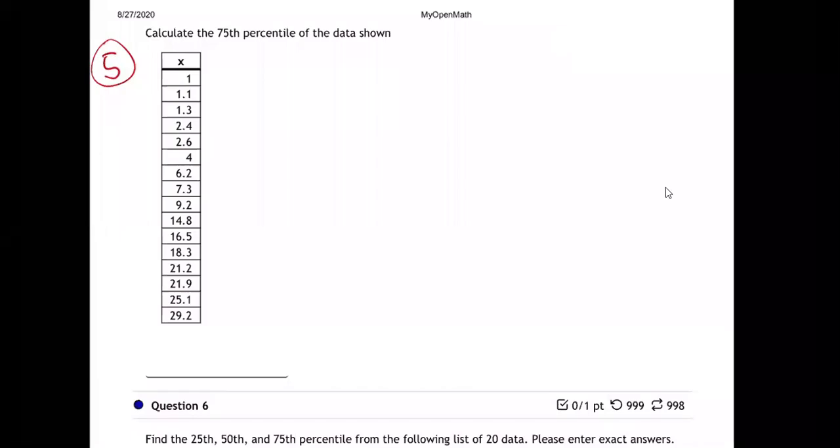Five. Here we go. So they're giving us a bunch of data. I'm not going to put that data in my calculator if it's not needed. They're asking me for the 75th percentile. So let's go through it again. How do you do the percentile?